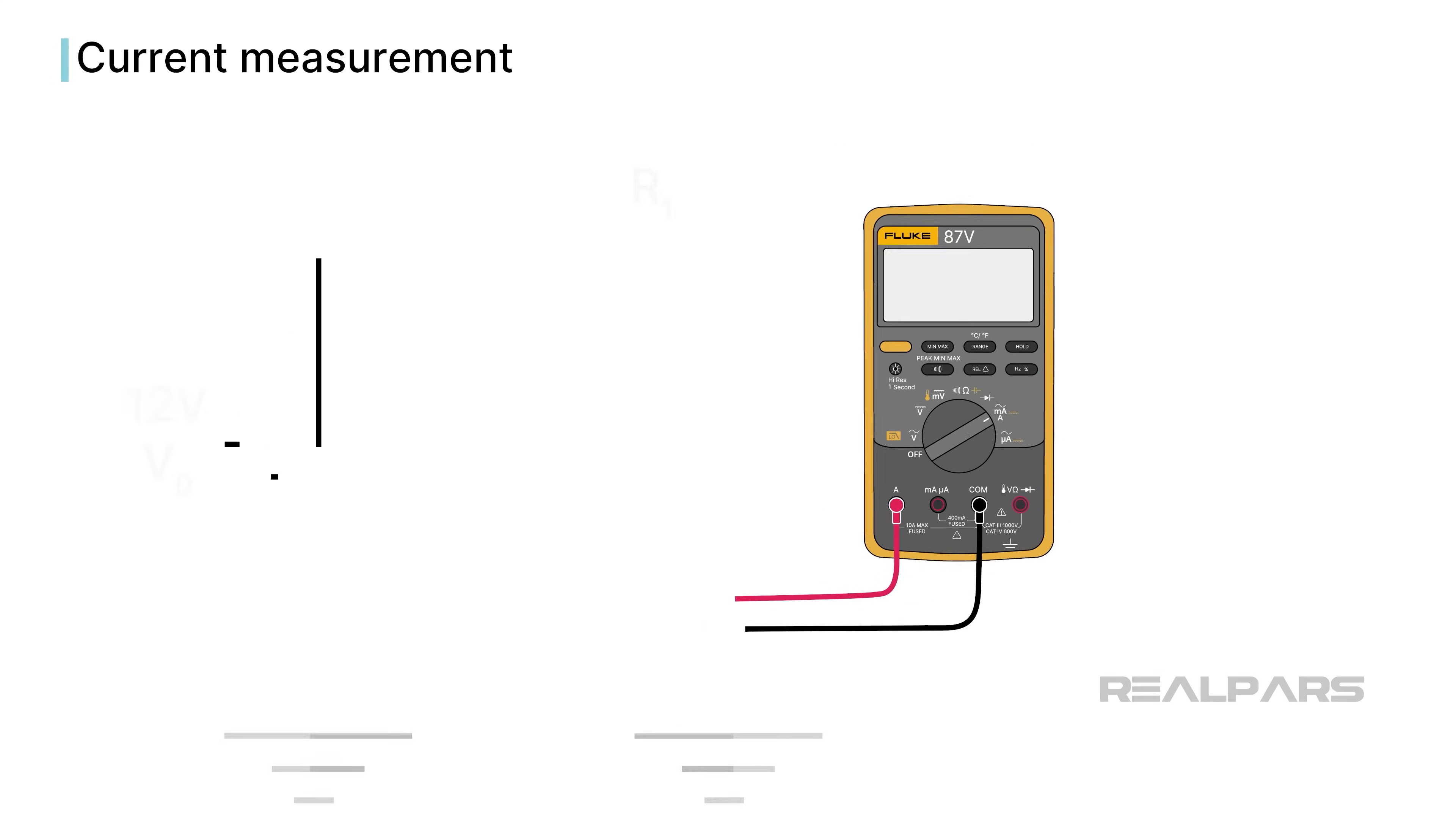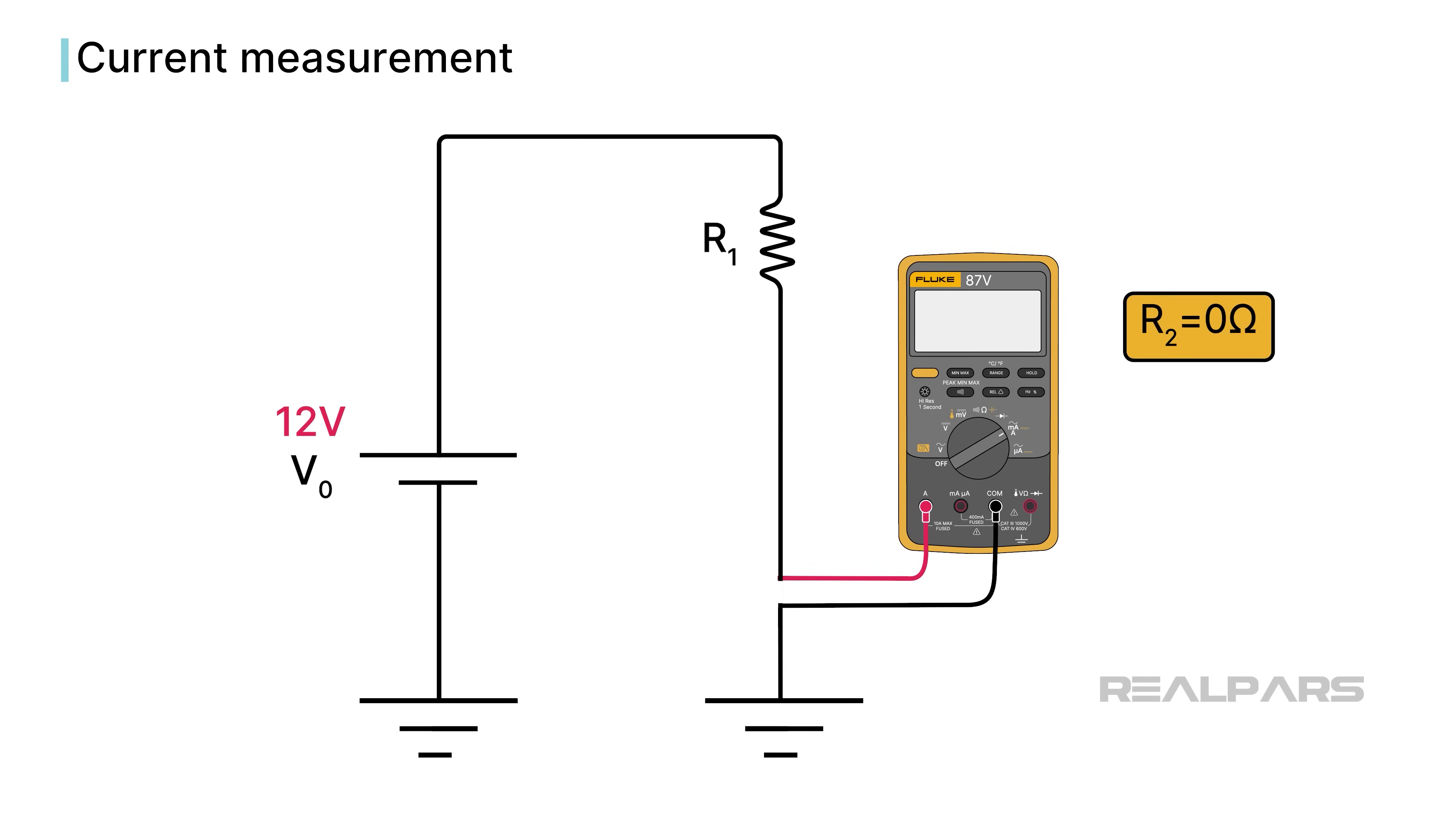It's important to remember that an ammeter has a resistance of 0 ohms and is supposed to be inserted in series. Why 0 ohms? Anytime you add a resistance in series, the total resistance increases. We do not want an increase in resistance when attempting to measure amperage.